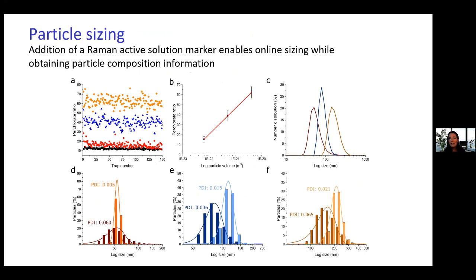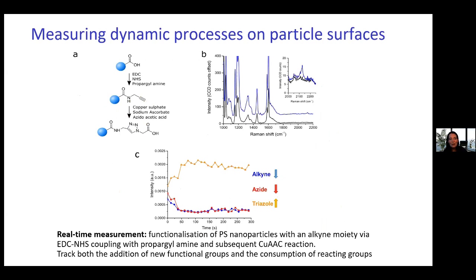You can correlate that to the size of the particle. You put a Raman-active solution marker in, and when the particle comes into the trap it displaces it, so you can essentially relate that to the volume the particle is occupying. You can find some really interesting trends between the chemistry of the particles and the volume for different formulations, and also measure drug loading and how proteins might be adhering to the surface of the particle.